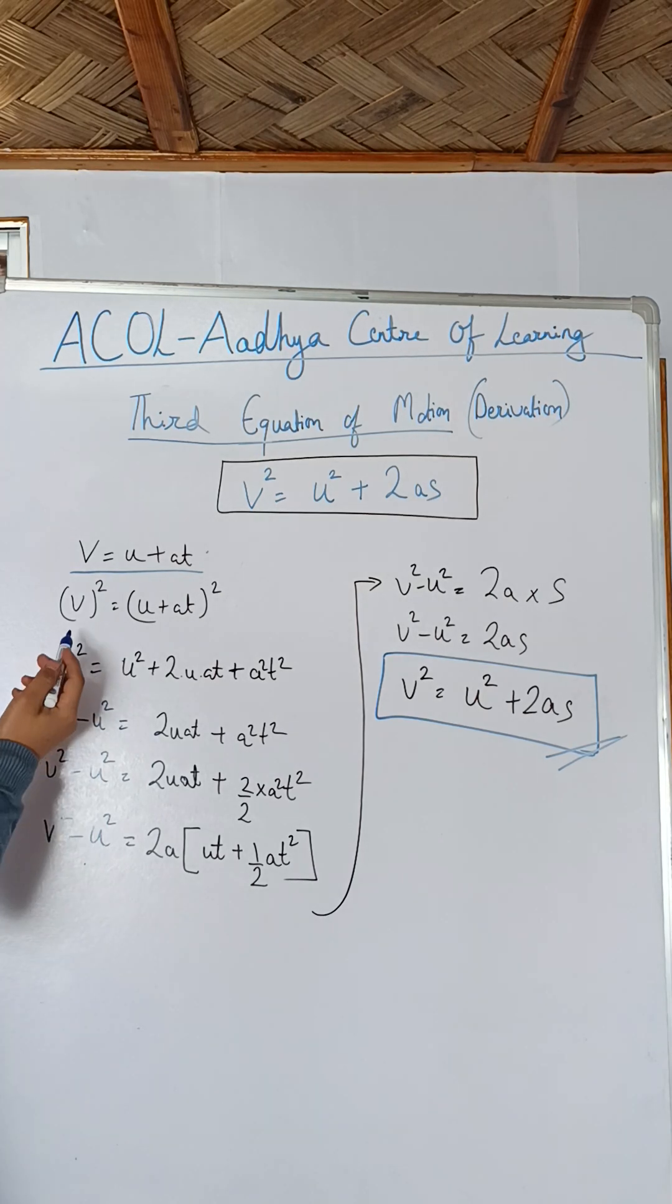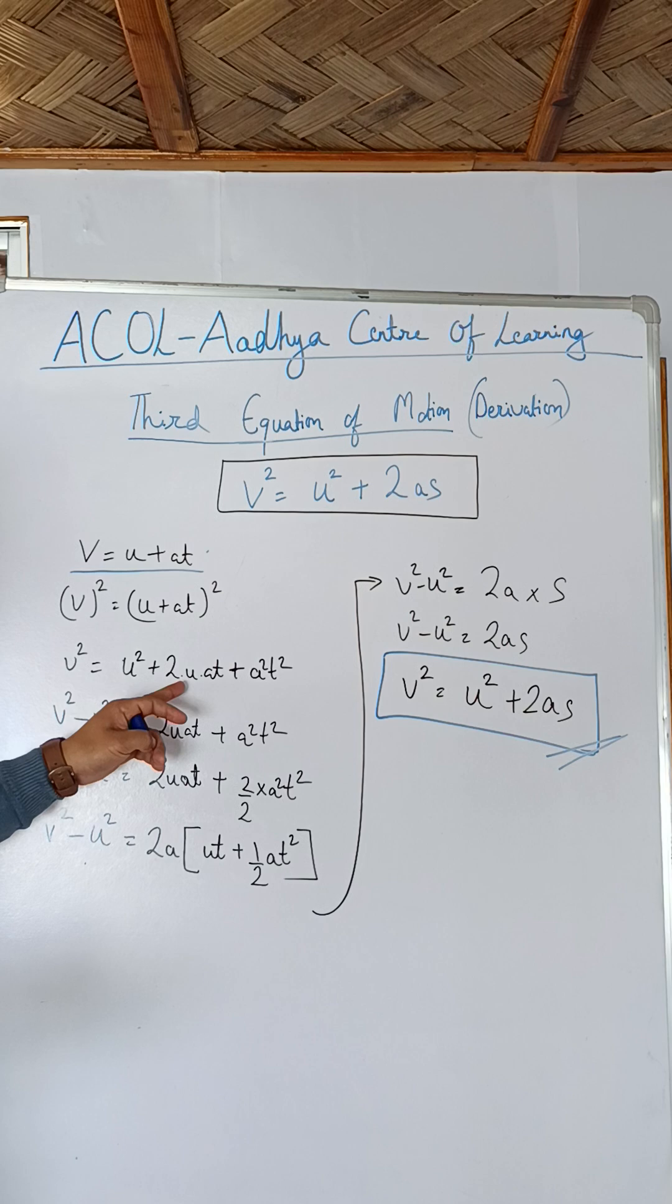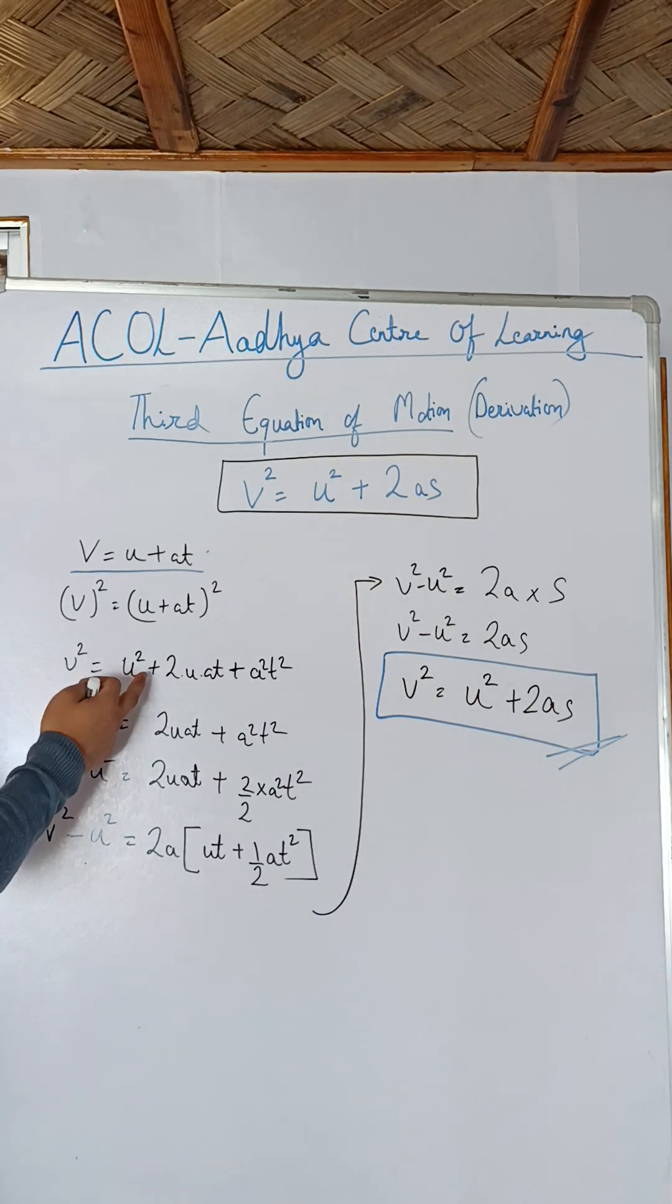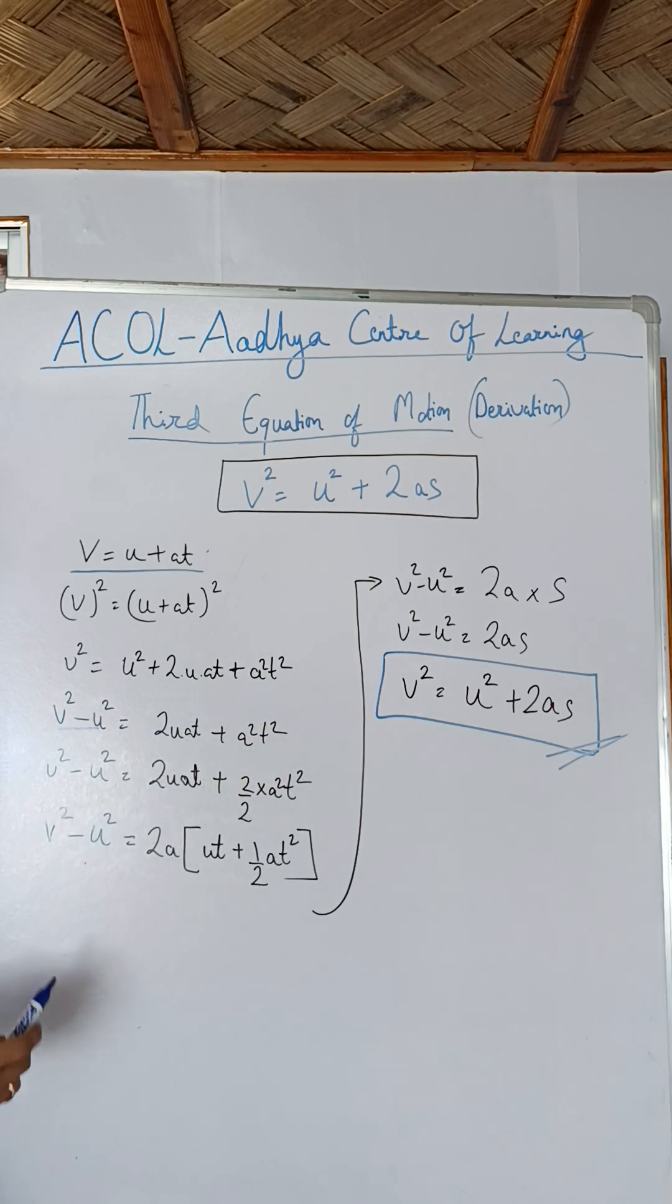Let's start squaring both sides. So both sides square, v square is equals to u plus at whole square, a square plus 2ab plus b square value, and u square plus 2uat plus at square value.